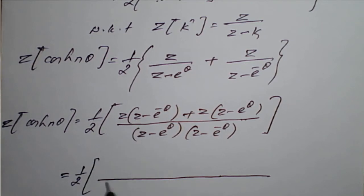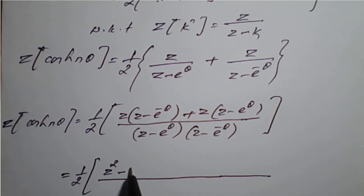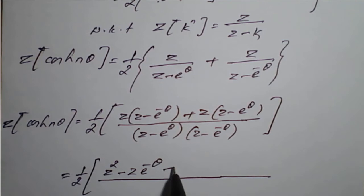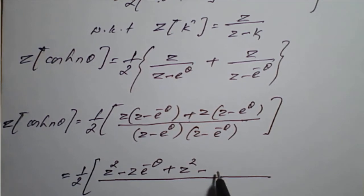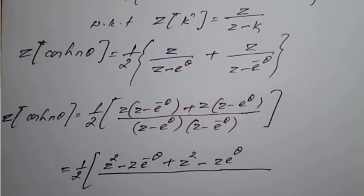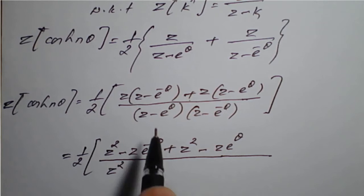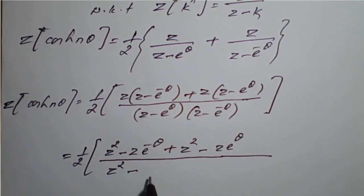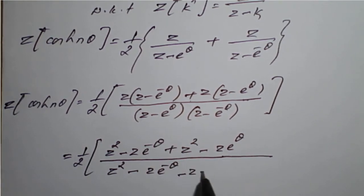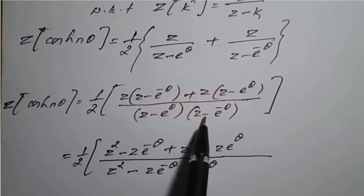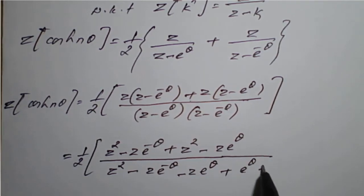Opening the brackets in the numerator: z times z gives z², z times −e^(−θ) gives −ze^(−θ). Then z times z gives another z², and z times −e^θ gives −ze^θ. In the denominator: z² minus ze^(−θ) minus ze^θ plus e^θ times e^(−θ), where e^θ · e^(−θ) = e^0 = 1.